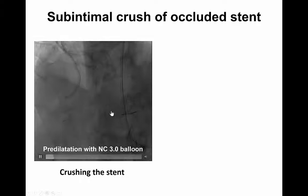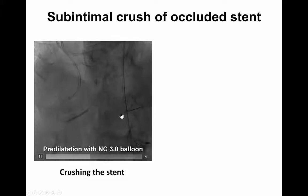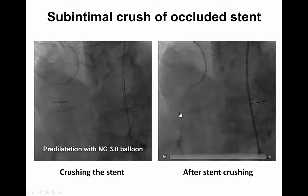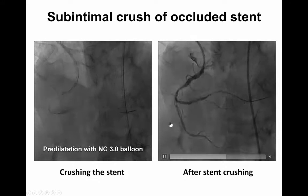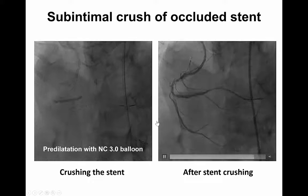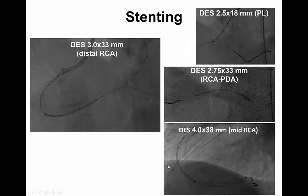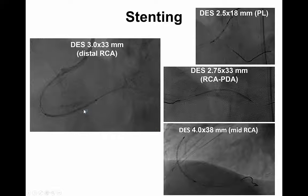This is the predilatation with a 3.0 non-compliant balloon that crashed the stent, and this is the immediate result after stent crashing. Then we carried on with standard PCI technique and implanted four drug-eluting stents in the distal RCA. This is the stent that will crash the occluded stent.